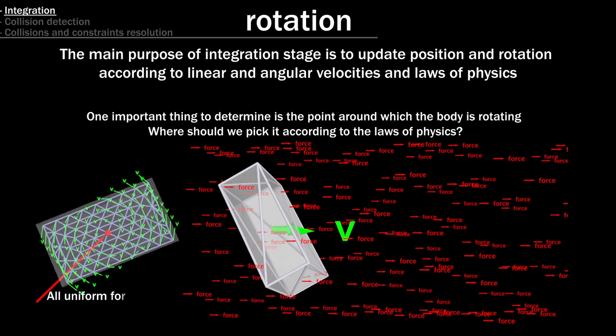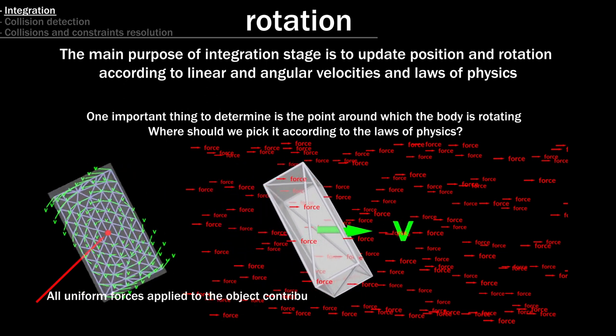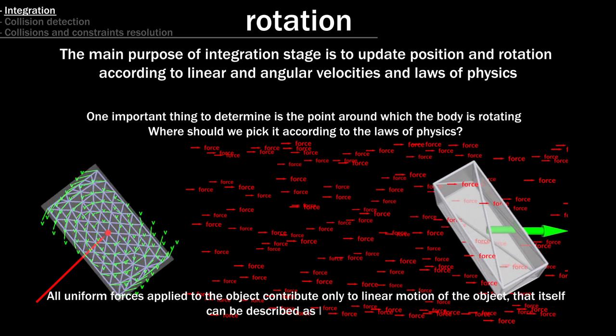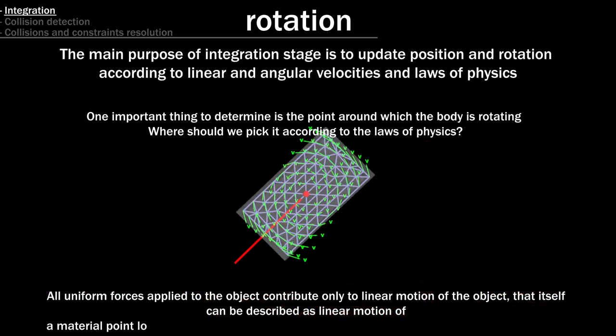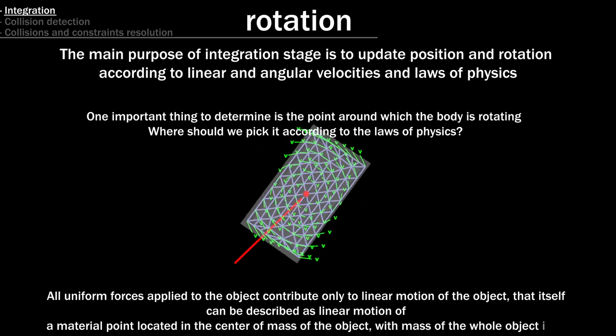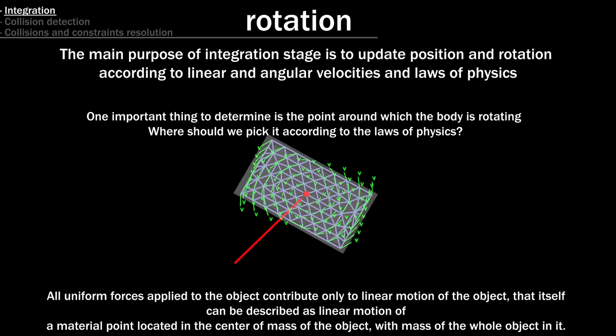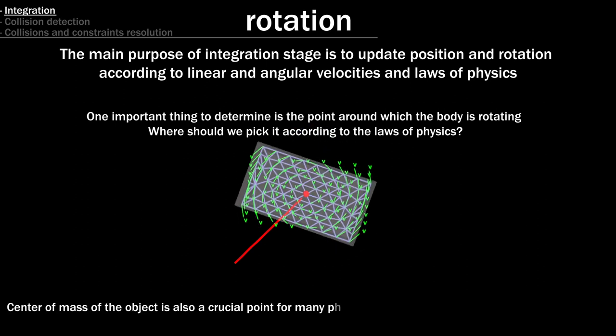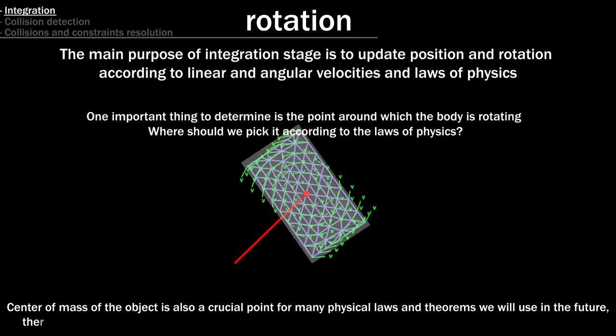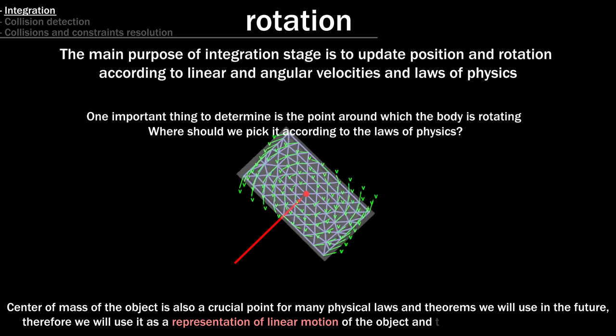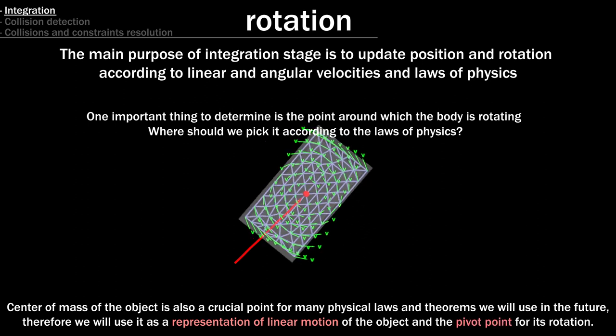So, all uniform forces applied to the object contribute only to linear motion of the object, that itself can be described as linear motion of a material point located in the center of mass of the object, with mass of the whole object in it. The center of mass of the object is also a crucial point for many physical laws and theorems we will use in the future, therefore we will use it as a representation of linear motion of the object and the pivot point for its rotation.